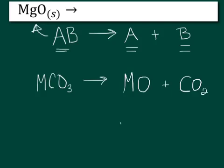So the first type was here, where we just have a very simple compound, two different elements, which will decompose into the two elements in their elemental form. Our second type here, we have a metal carbonate, which will end up with a metal oxide and carbon dioxide.